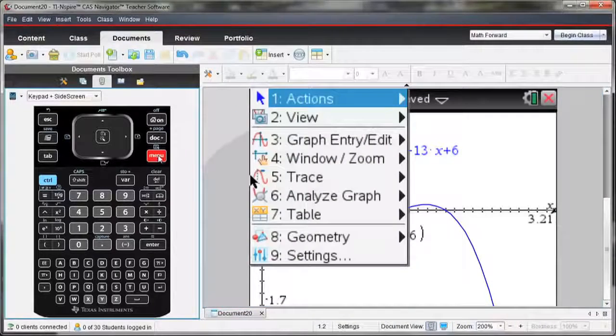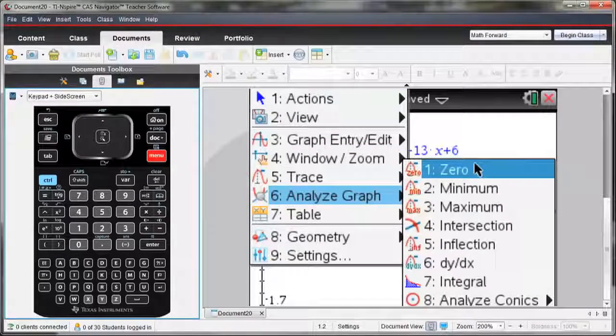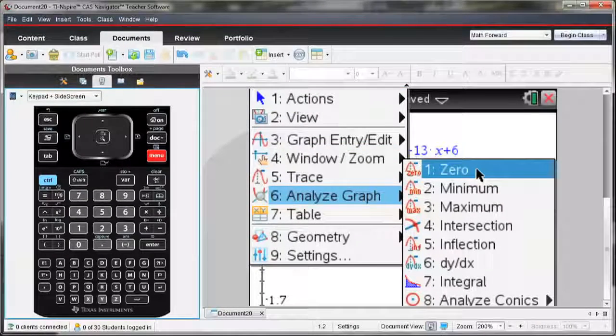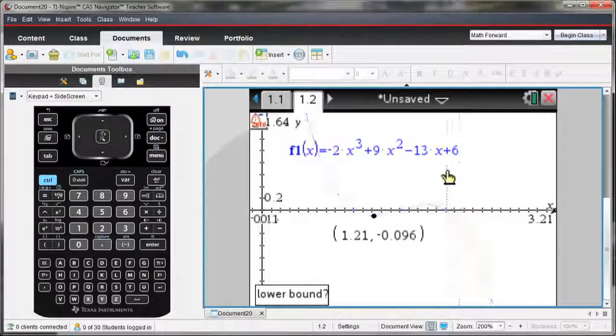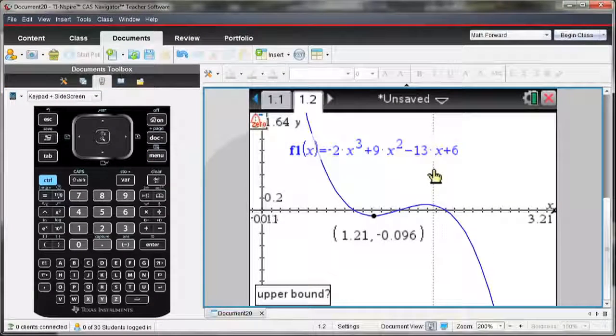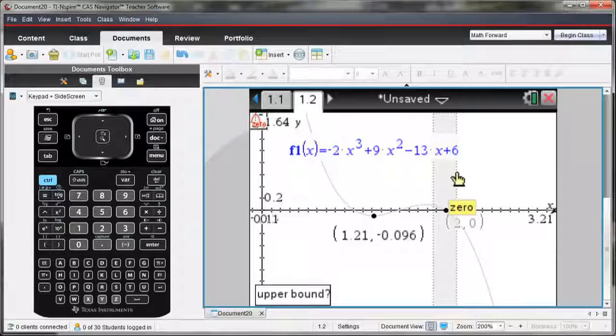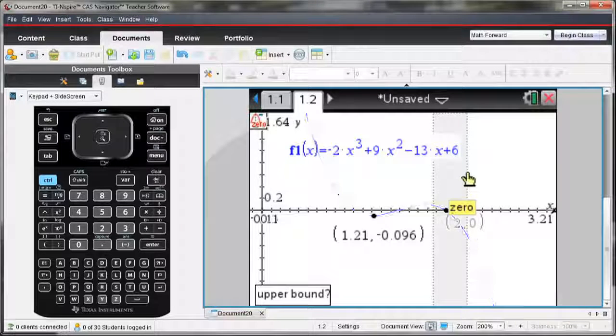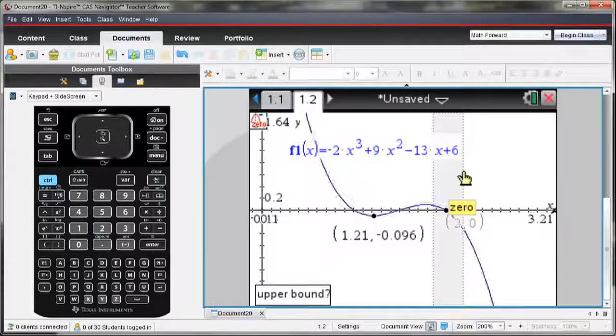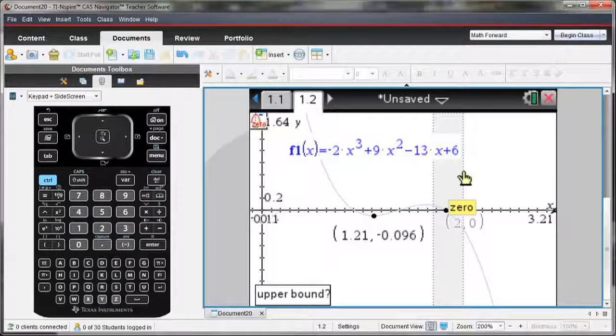Now likewise, I can also do this for my zeros. I'm going to select Menu, Analyze Graph, and Zero. Start my lower bound from the left of the zero you'd like to know, and drag over so that the upper bound is just to the right. Notice as I did that, the zero value where my zero occurred showed up on the graph.